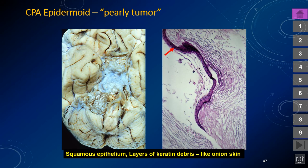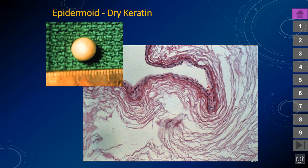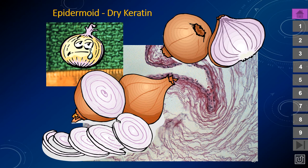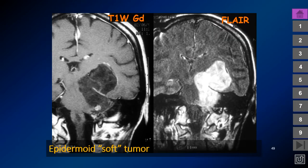Epidermoid inclusion cysts have a pearly, mother-of-pearl appearance. The posterior fossa epidermoid can snake through the tentorial hiatus and present in both the middle fossa supratentorially and in the posterior fossa. The living part of the lesion is the squamous epithelium lining, while the lumen is filled with dead skin flakes — very thin linear structures of dry, waxy, flaky keratin, somewhat like an onion skin. Sometimes they form a keratin pearl, similar to a pearl inside an oyster. Always look for these linear structures that represent the contents of the epidermoid.